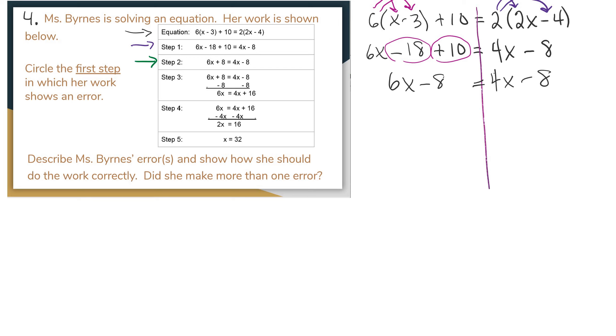So I'm looking at step 2. 6x plus 8. So they have a different sign than what we have. So that's the first mistake right there, step 2. They put a plus 8, and it should have been a minus 8.